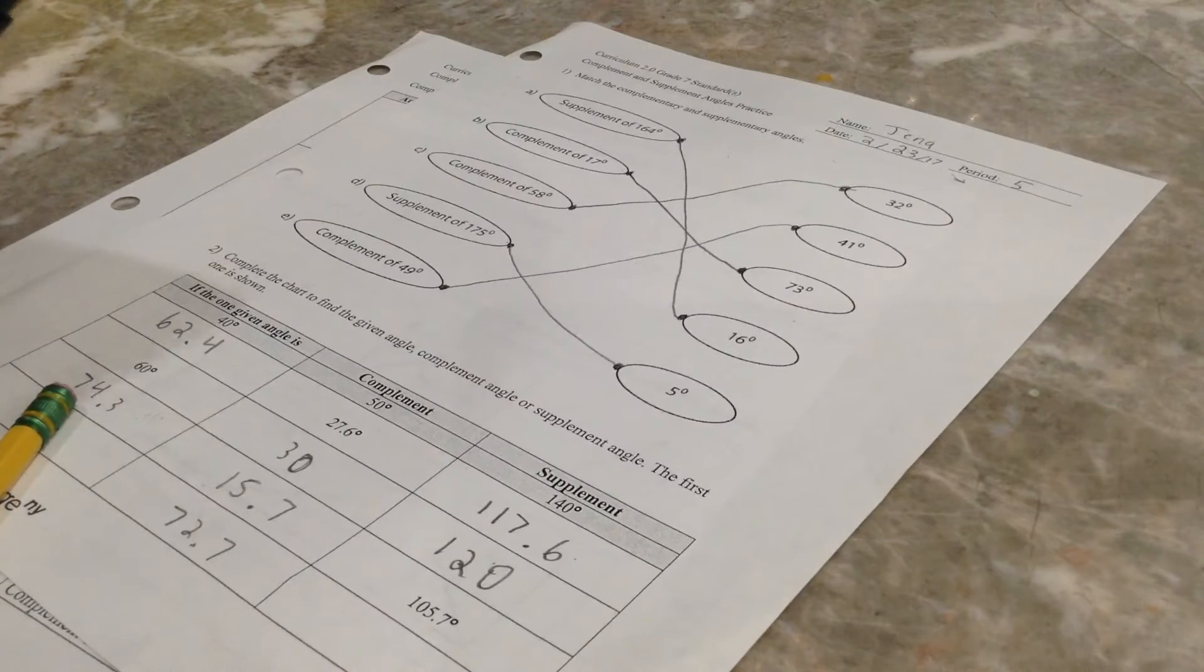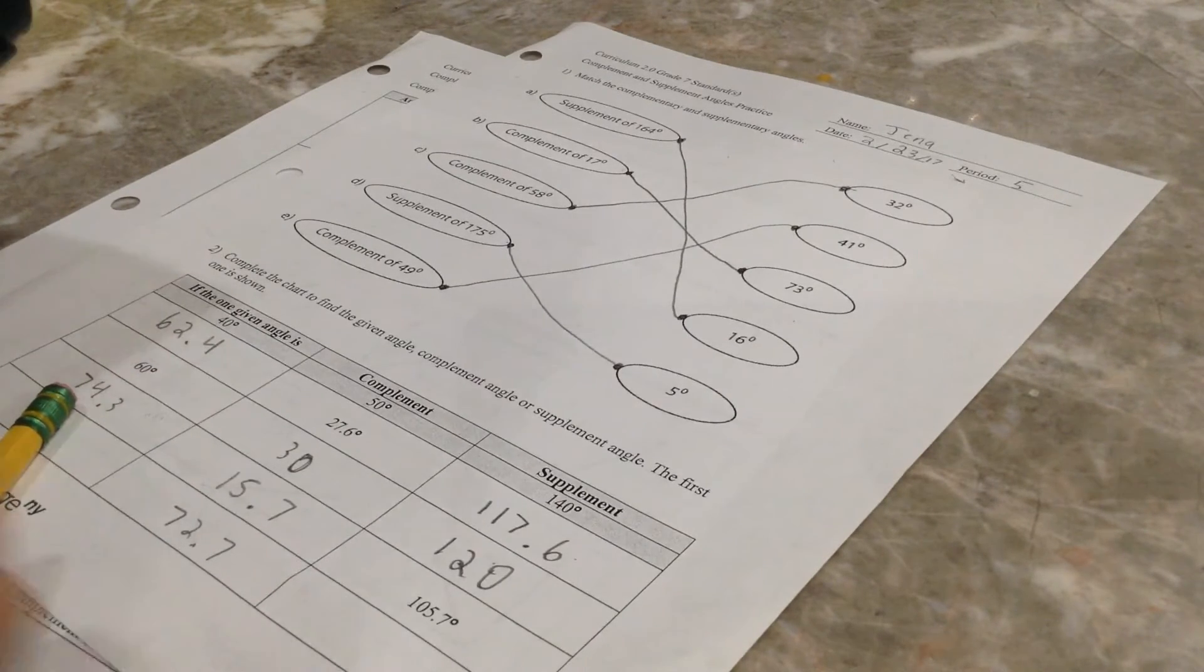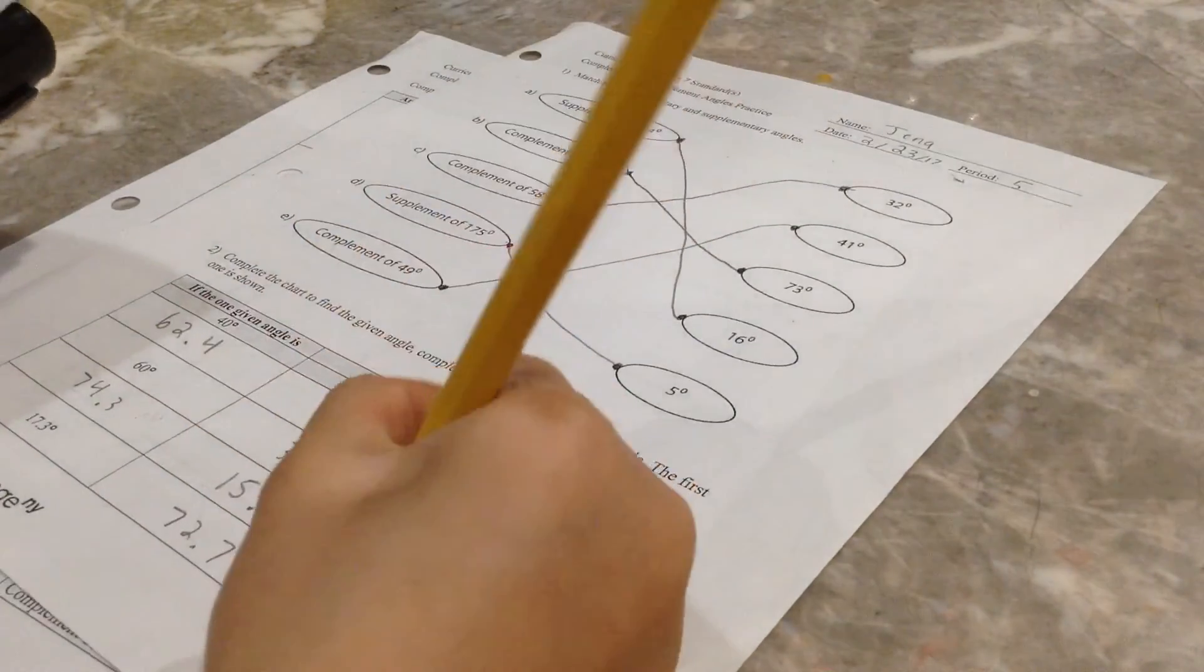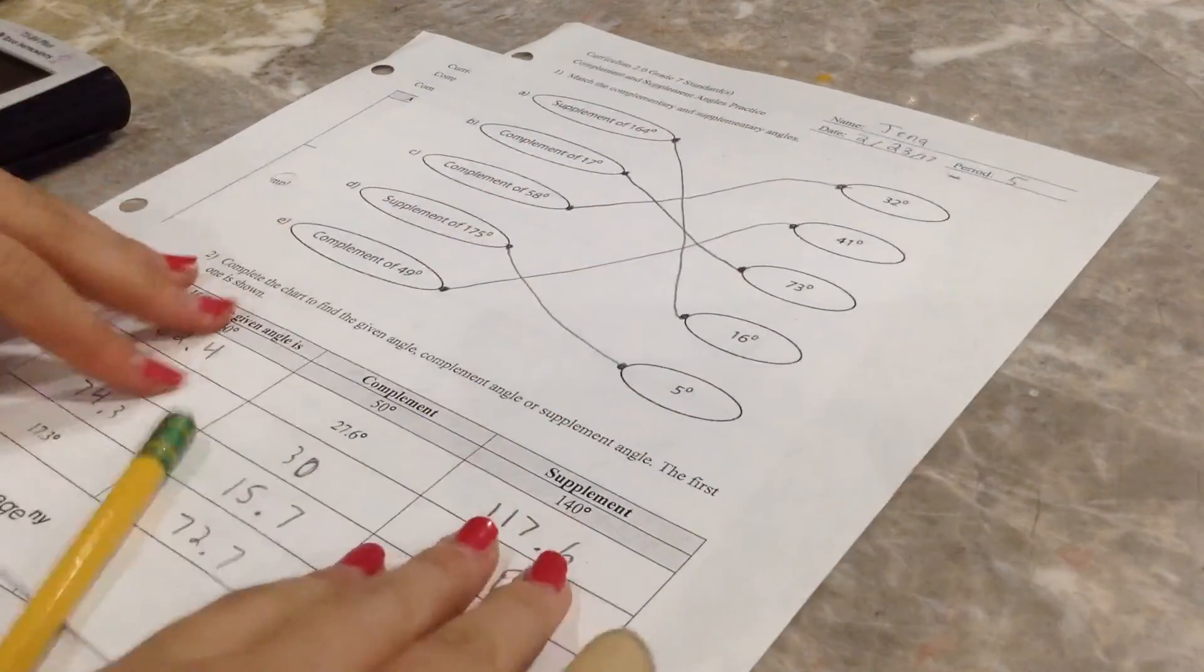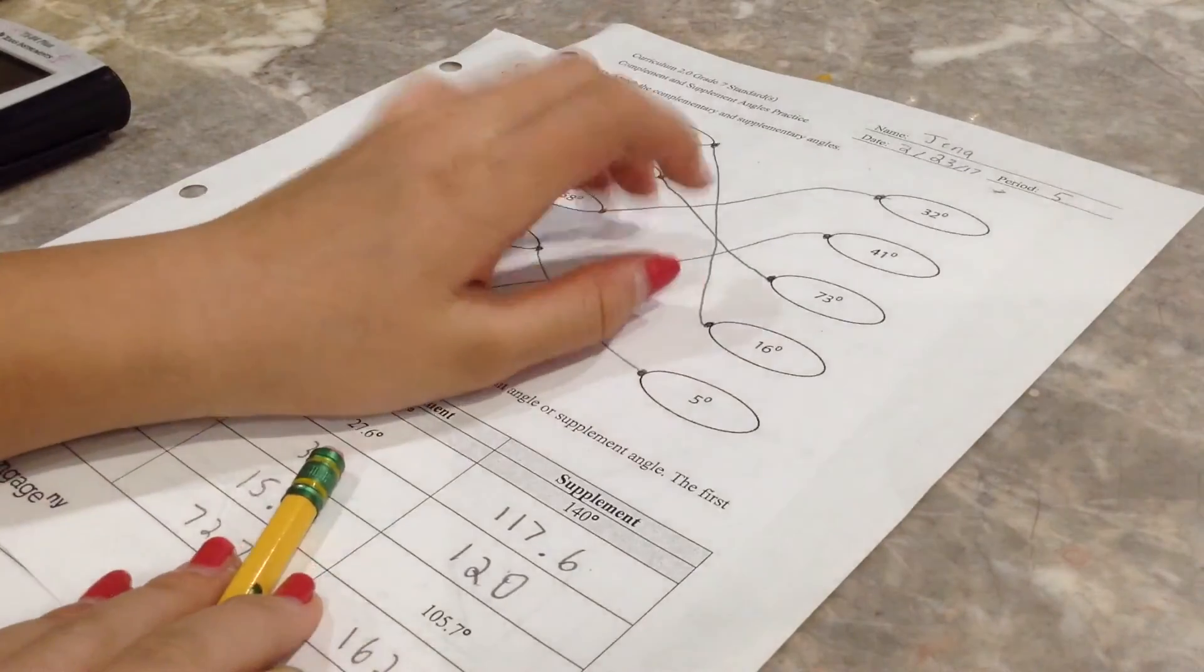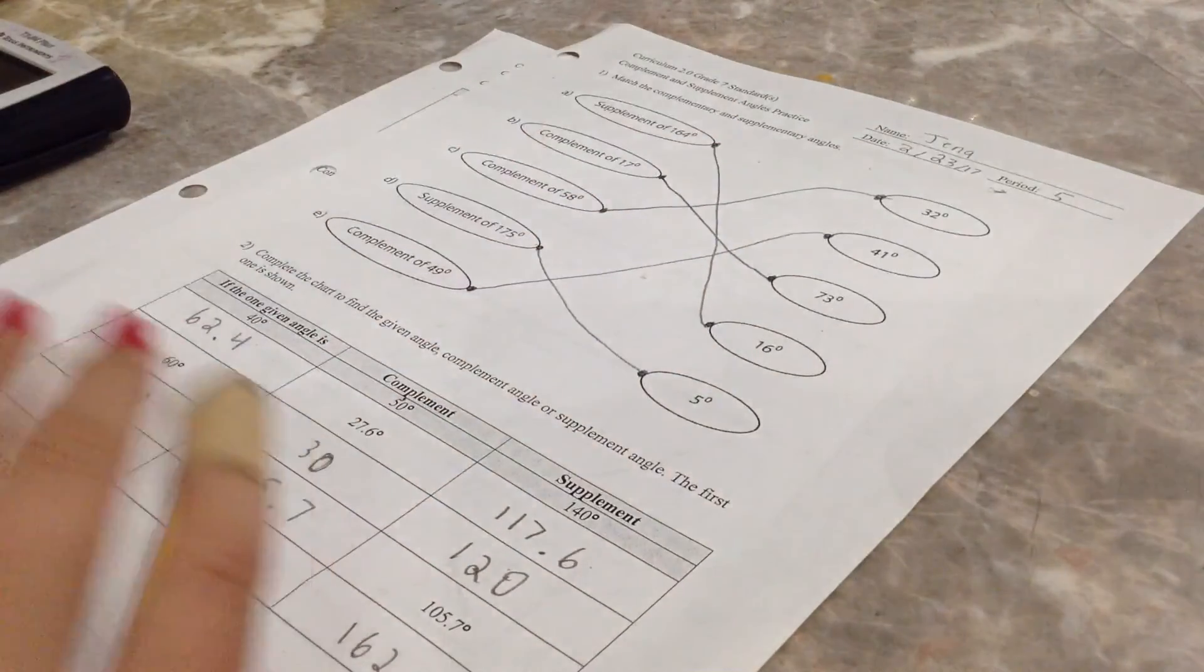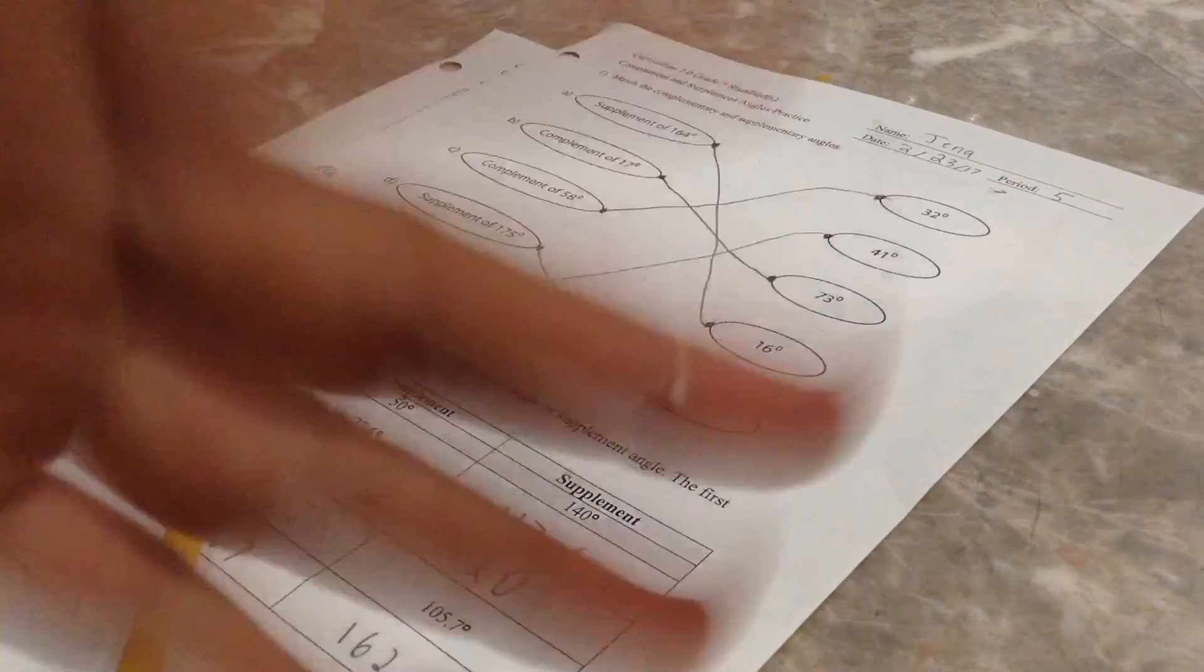And then 100... Oh, okay. 180, subtracted by 17.3 equals 162.7. And I finished the first page of my math homework, you guys. So thanks for watching this video, and goodbye! Bye!